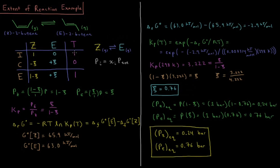The total pressure initially is 1 plus 0, which equals 1 bar. The change that occurs during the reaction: the coefficient on each side is just 1, so we have minus C for Z and plus C for E. Minus C plus C equals 0, so there's no change in the total number of moles. At equilibrium we have 1 minus C for Z, plus C for E, and 1 minus C plus C equals 1 for the total — consistent as both a row and column sum.